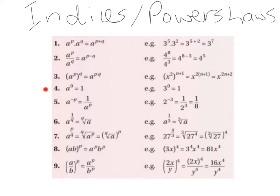Law 4: A to the power of 0 equals 1. Anything to the power of 0 equals 1. For example, 3 to the power of 0 equals 1.